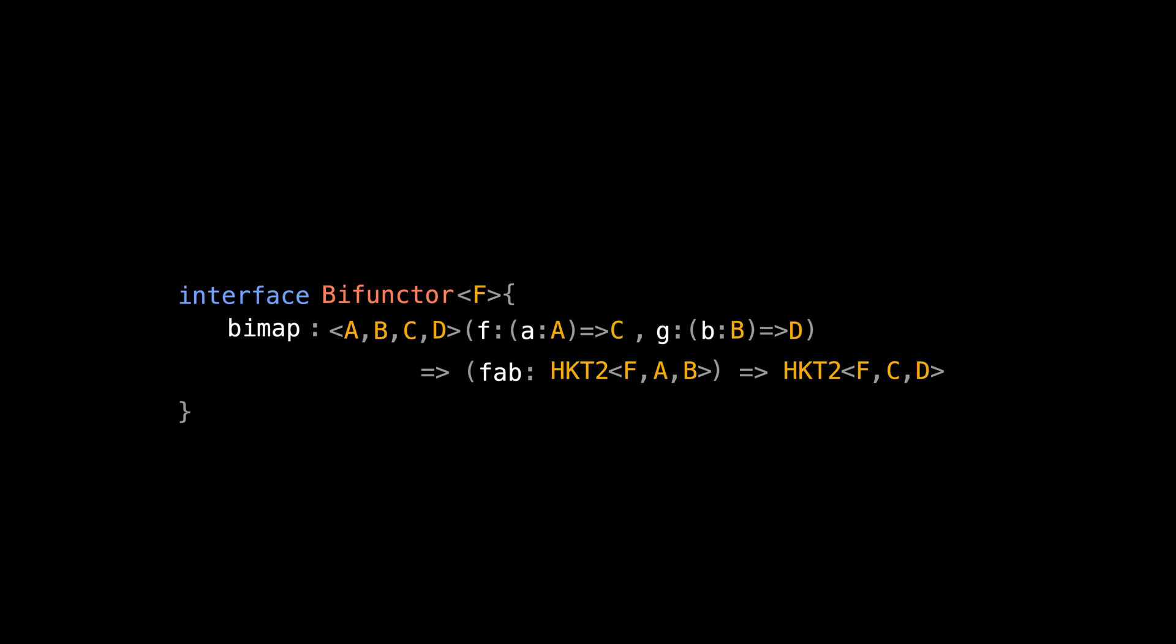Alright, but just the fact that a structure wraps two types doesn't automatically make it bifunctor. Similar to functors, in order for a structure to be bifunctor, it needs to follow some laws. The good news is, we are already familiar with these laws. In order to see this, let's refresh what we already know about functors in category theory again.